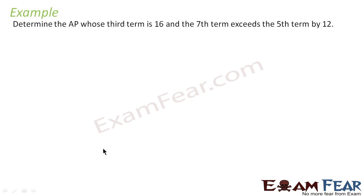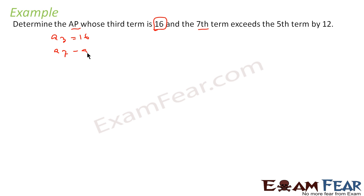Let's take one more example. The question says we have to find the AP whose third term is 16 and the 7th term exceeds the 5th term by 12. That is, a3 is equal to 16 and a7 minus a5 is equal to 12.